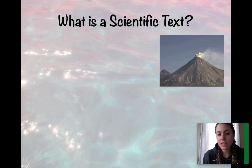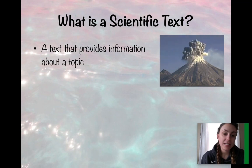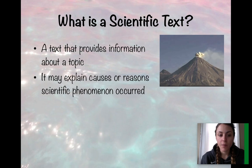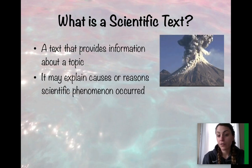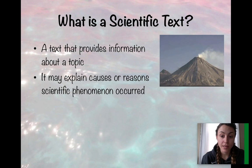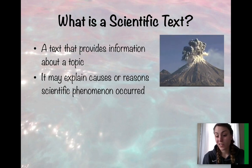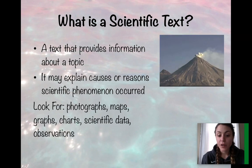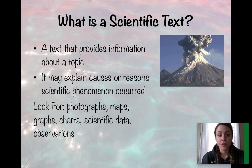What is a scientific text? It is a text that provides information about a scientific topic. It may explain causes or reasons a scientific phenomenon occurred — for example, the reasons why a volcano erupts and why sometimes it stays dormant. We look for photographs, maps, graphs, charts, scientific data, and observations within those scientific texts.